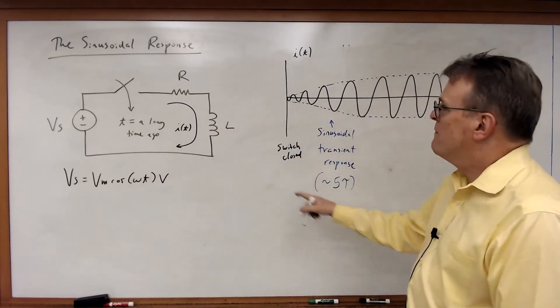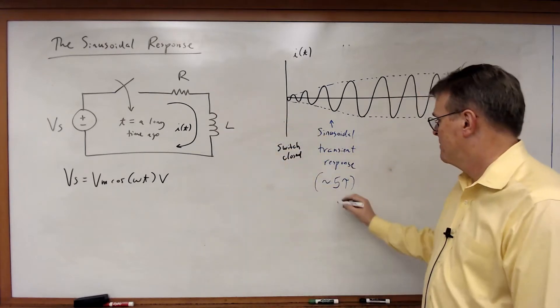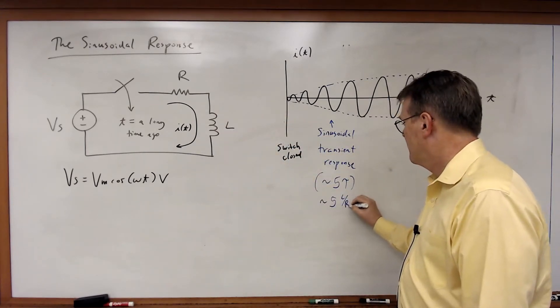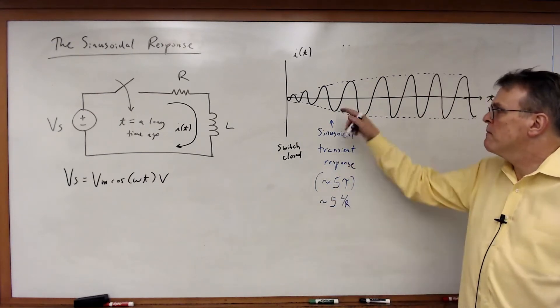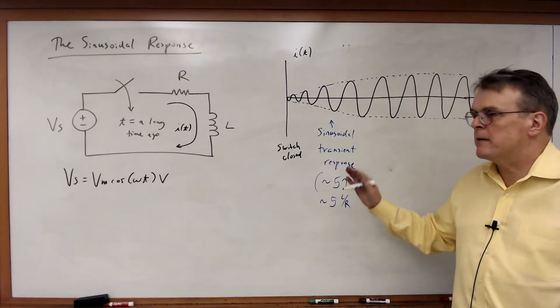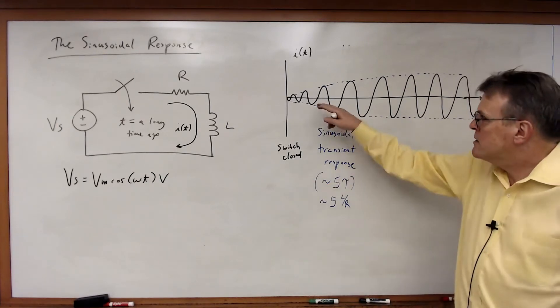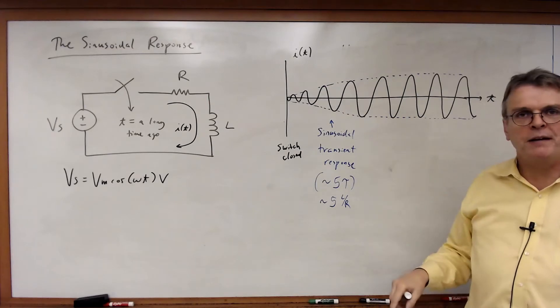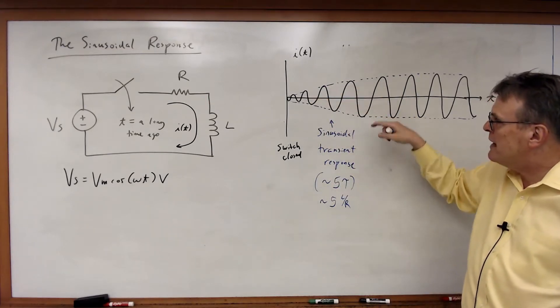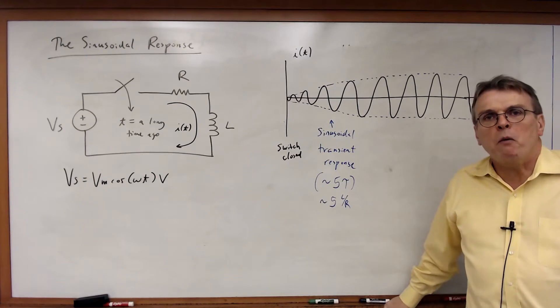So in other words, 5 times L over R. So the rules still hold. That sinusoidal 5 tau, pardon me, that exponential 5 tau rule of thumb would still be here. There would actually be an exponential response on top of the sinusoid, and that exponential response would trace out the magnitude of the waveform.